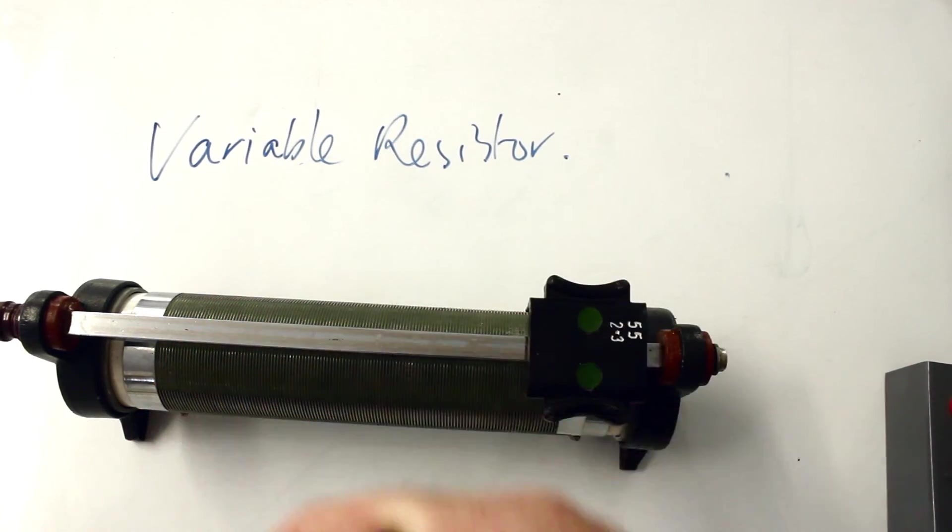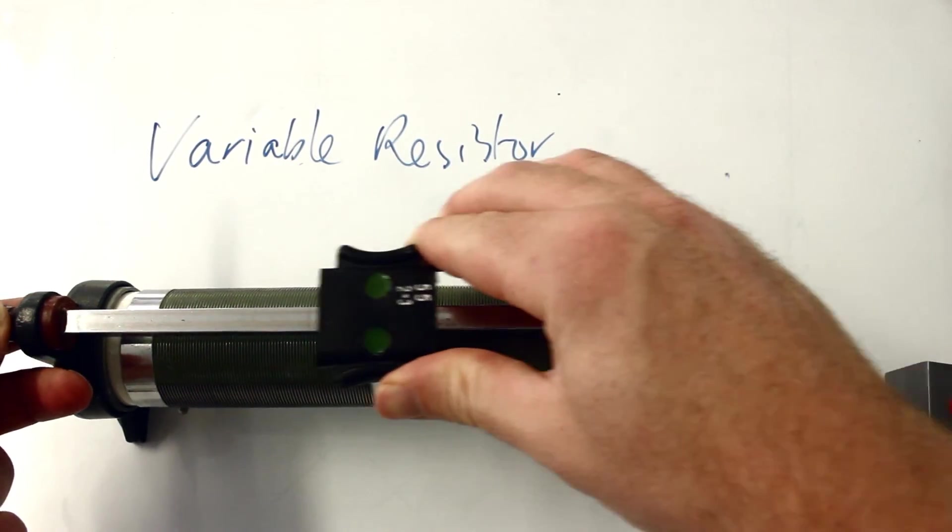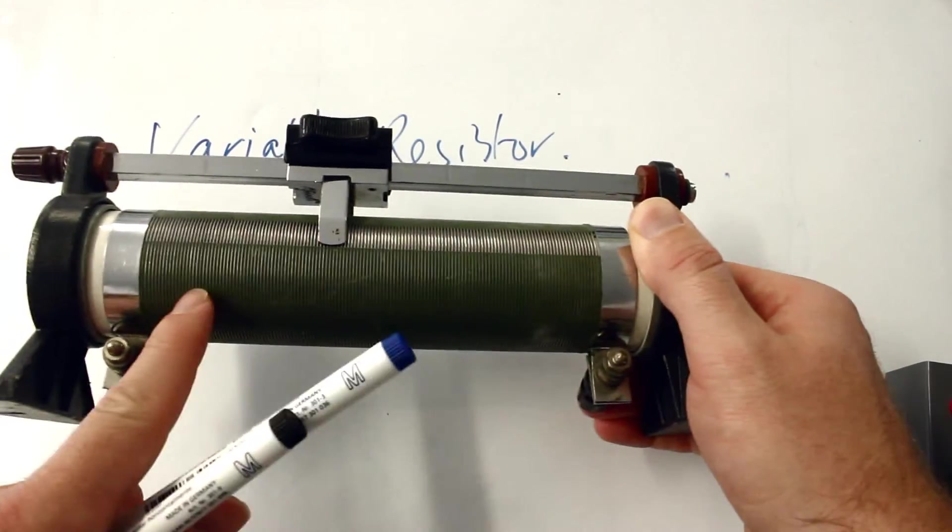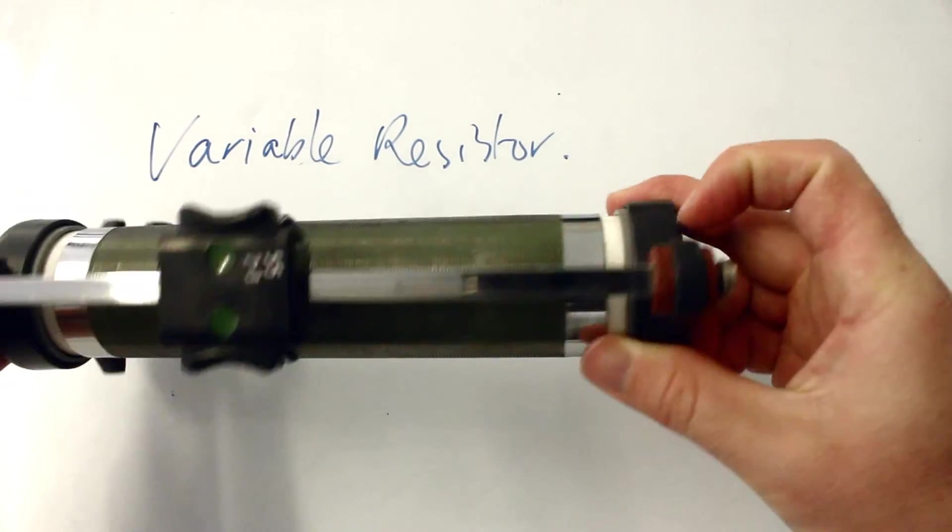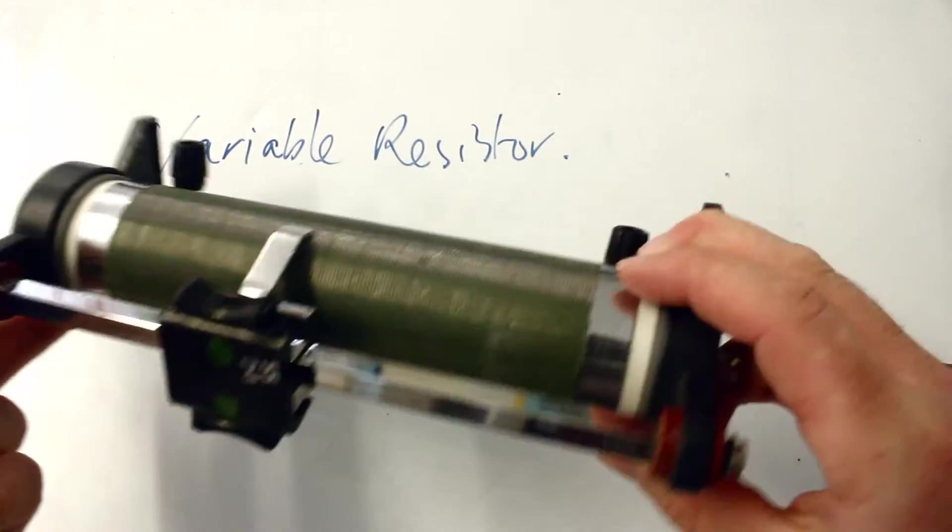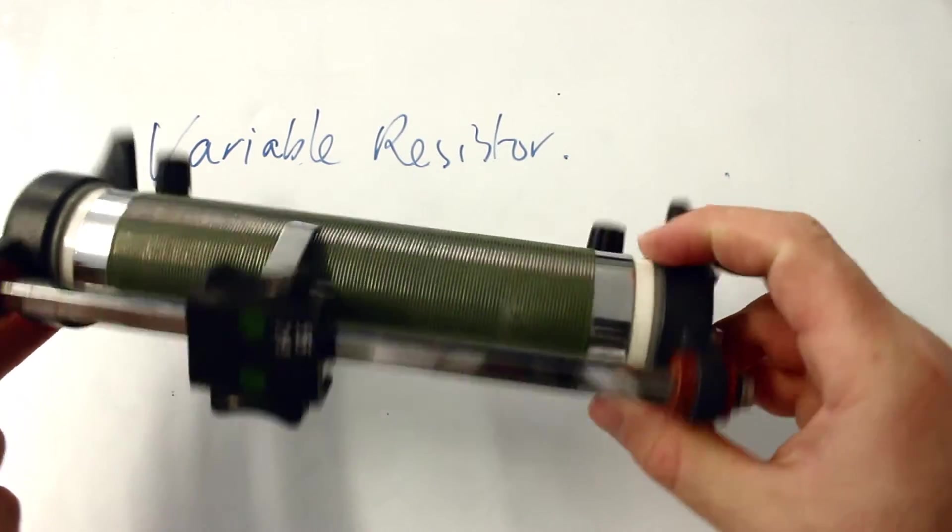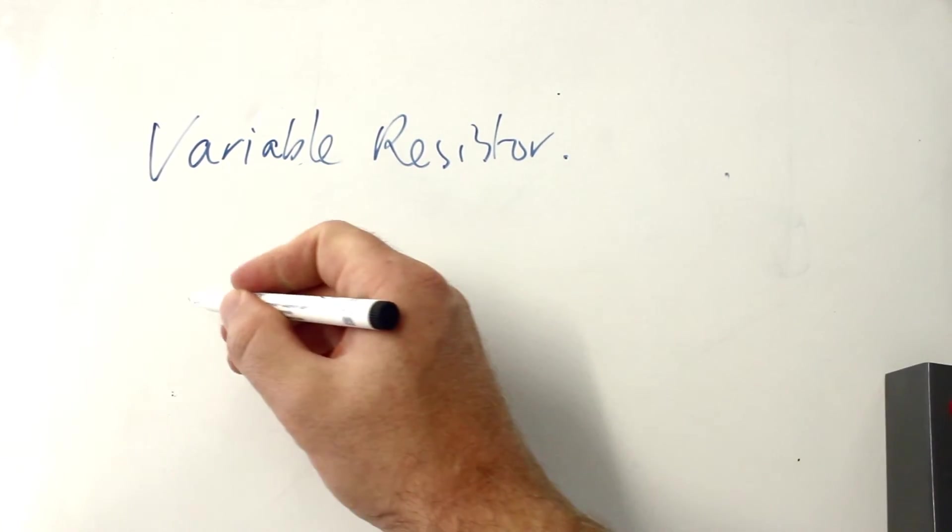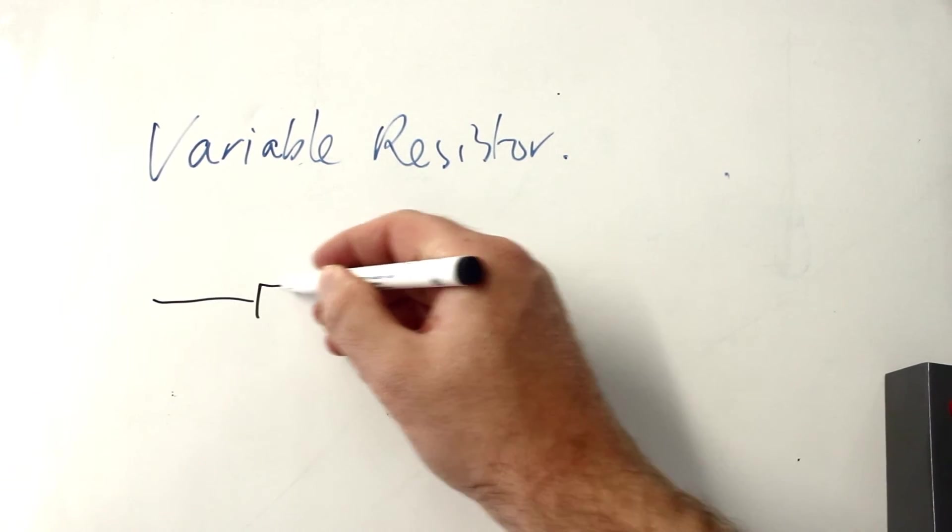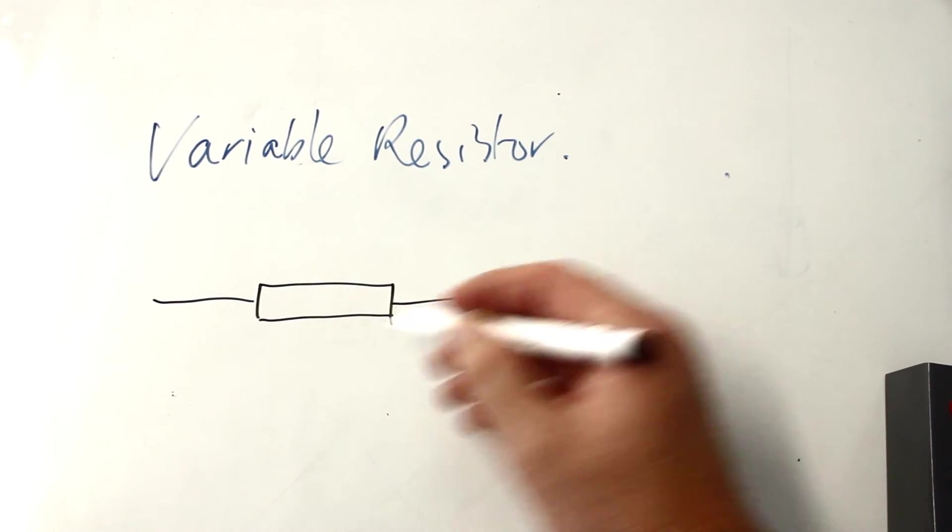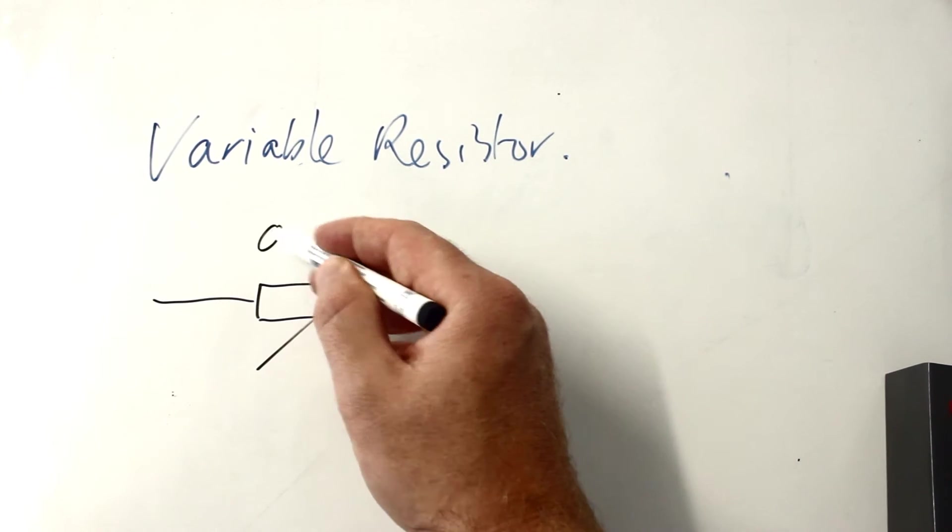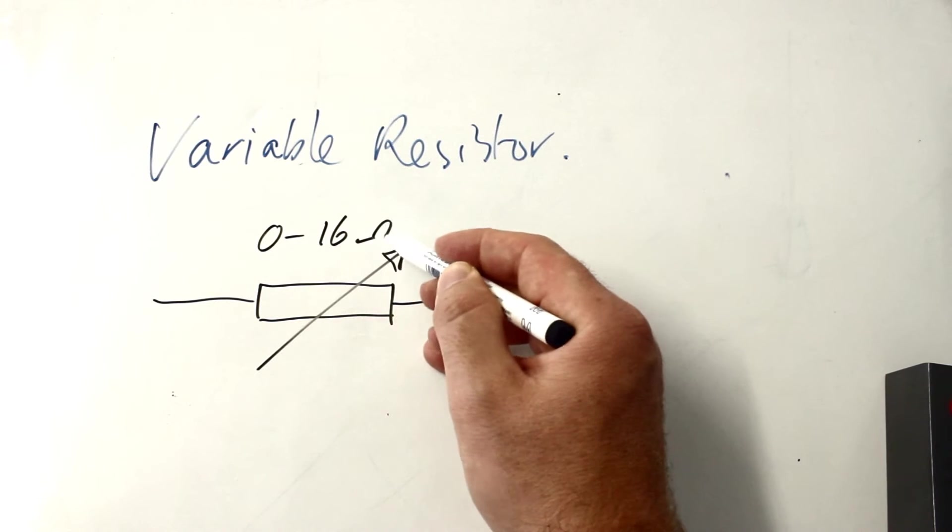This is a variable resistor. It can just slide along like that to change the amount of this wire, the length of this wire that it's going through. As long as you're plugging in this one and this one, then it'll be a variable resistor. And it has a symbol just like an ordinary resistor. But with an arrow through it just to show that it is variable. That one goes from around 0 to around 16 ohms.